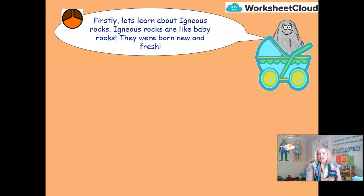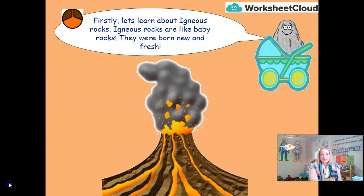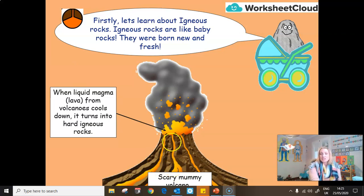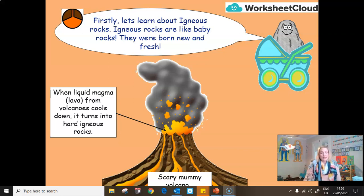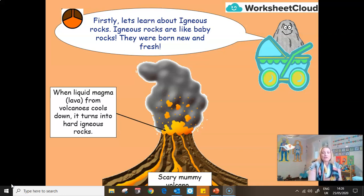Igneous rocks are like the baby rocks — they are born fresh and new from mummy volcano. When liquid magma, or molten rock, reaches the surface of the volcano and the volcano erupts, this is then called lava. When it comes out onto the surface, we call it lava, and once that cools, it hardens to form igneous rock. That magma is coming from the Earth's mantle — just below the Earth's crust, the next layer down is the upper mantle, which we learned about in our lesson on the structure of the Earth. It's where volcanoes form at plate boundaries, and that is where up comes this hot molten rock. A good example of an igneous rock is granite — very strong, very tough — formed from the cooling of lava.